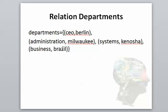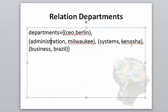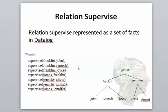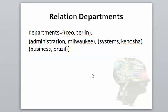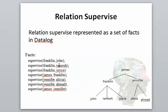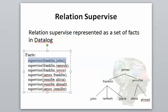Similarly, the departments table has four elements. Now the third table, supervise, is described or listed as a set of facts. So this is my first table, second table, and third table. Instead of listing supervise as a relation, I'm representing it as a set of facts — here we have supervise, supervise, supervise repeated for each tuple.